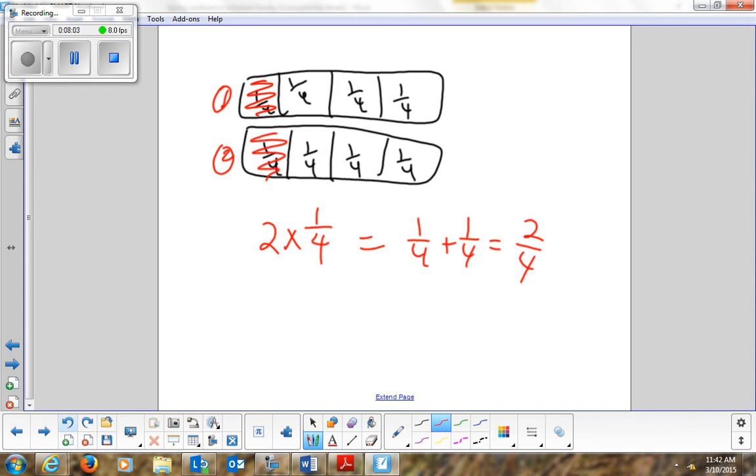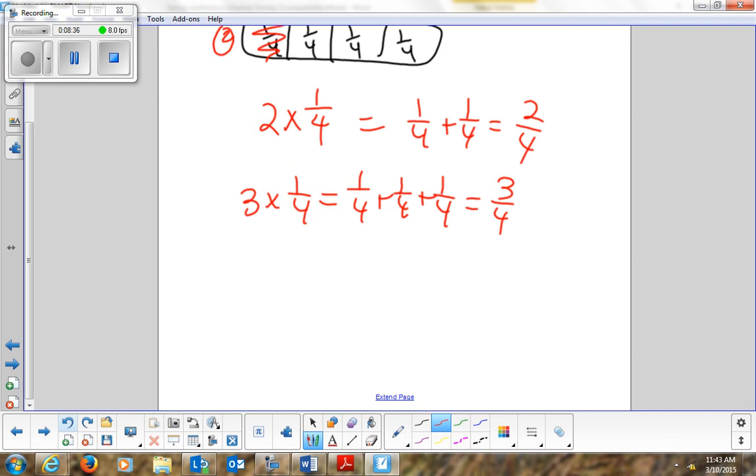So same thing goes for looking at the second one. It's got three of those boxes colored in. So what would my multiplication equation be? Three times one-fourth. Three times one-fourth, which is the same as one-fourth plus one-fourth plus one-fourth, which is the same as three-fourths.